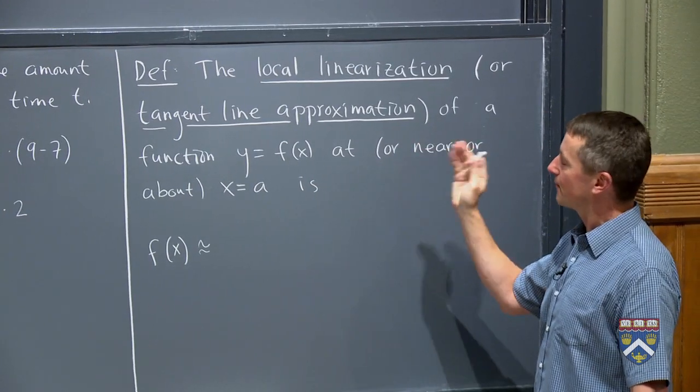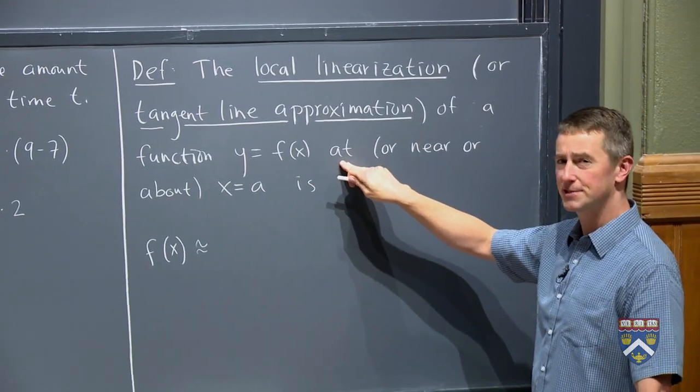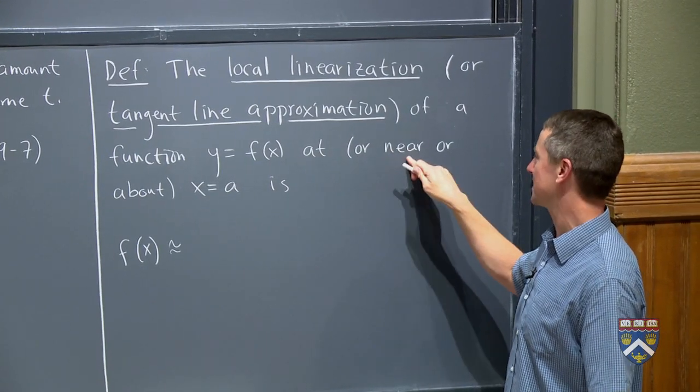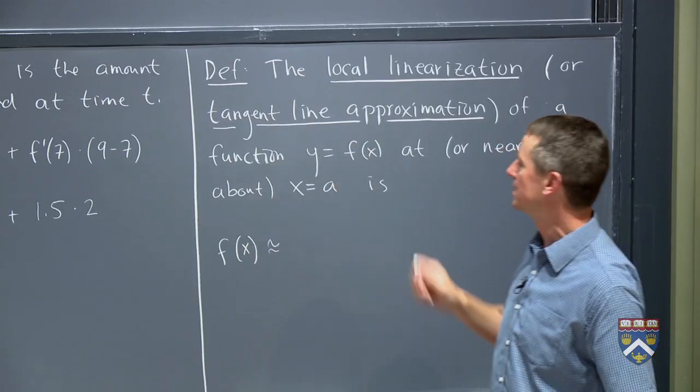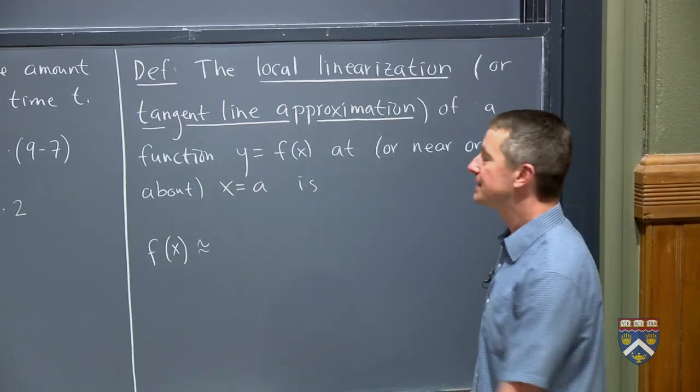And then people use a different variety of prepositions, is that what these are called? At, sometimes they say at, sometimes they say near, sometimes they say about. A point x equals a is given by this formula.